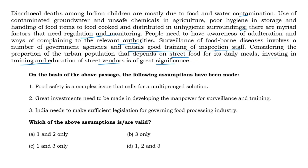What do we understand from this passage? Diarrhea caused by contaminated water is the reason for most diarrheal deaths of Indian children. Use of contaminated groundwater, unsafe chemicals in agriculture, poor hygiene in food items and handling them in an unhygienic manner all need regulation and monitoring. People need awareness about adulteration and ways of complaining to relevant authorities. Surveillance of foodborne diseases needs government agencies and good training of inspection staff. Considering the urban population depending on street food, investing in training and education of street vendors is of great importance.